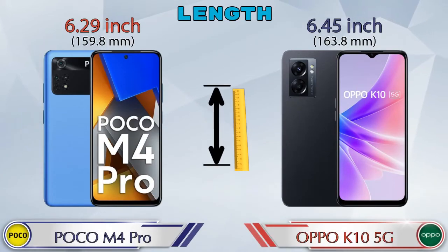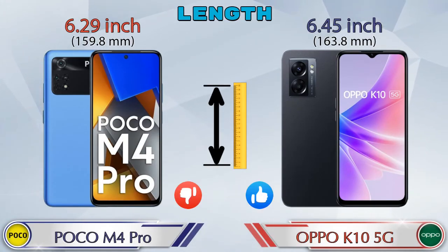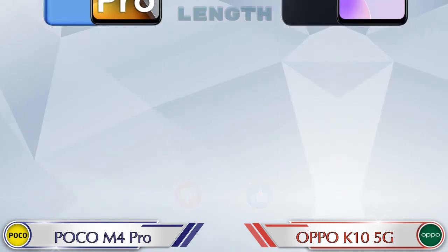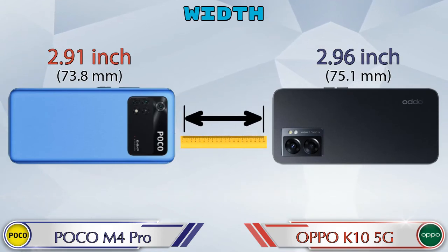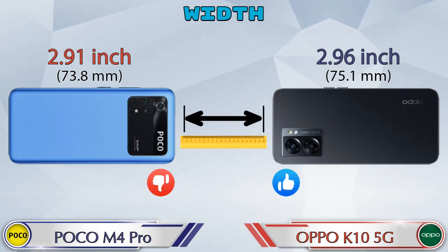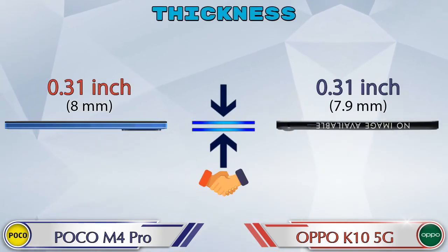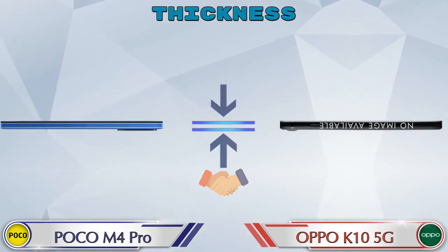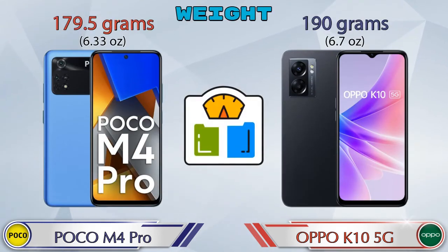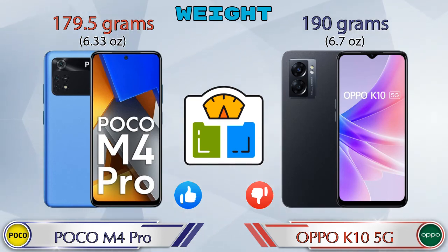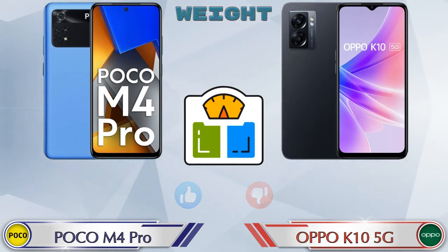Talking about the length of both phones: POCO M4 Pro has 6.29 inches and K10 5G is 6.45 inches. Width: POCO M4 Pro has 2.91 inches and K10 5G is 2.96 inches. Both phones have the same 0.31 inch thickness. Talking about weight, POCO M4 Pro is 179.5 grams and K10 5G is 190 grams, which is heavier than POCO M4 Pro.